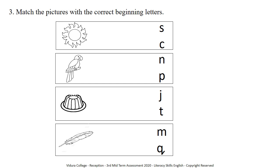Now we are going to do your third question. The third question is: Match the pictures with the correct beginning letters. Can you see there are four boxes? Each and every box has one picture and two letters. You have to find the correct beginning letter for the picture. Let's move to the first box. What is this picture? It is a sun. What is the beginning letter of 'sun'? Take your writing pencil and match it to the correct beginning letter.